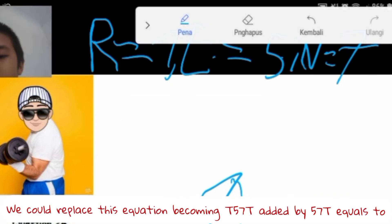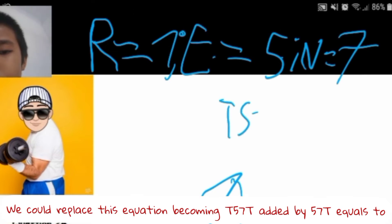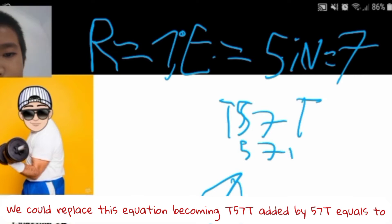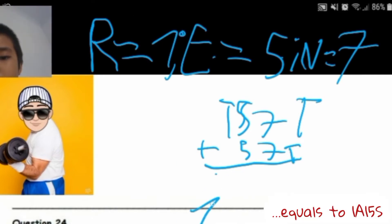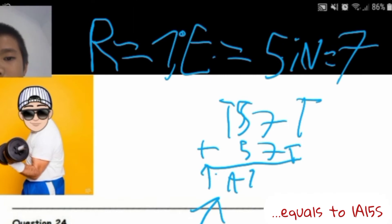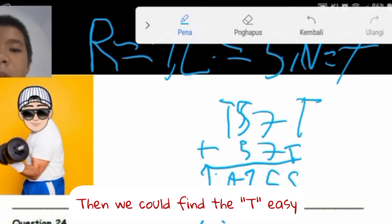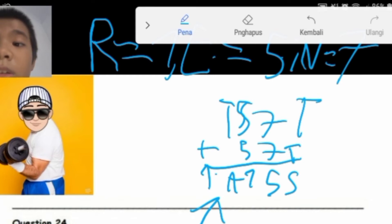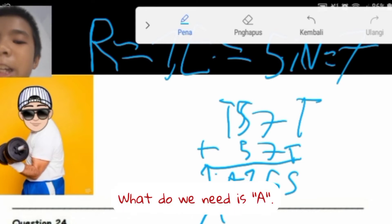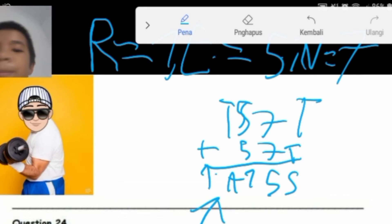So we replace the equation: T57 added by 57T equals 1A15S. We can then find S and T easily. But what we really need is A, so we need to find T first.